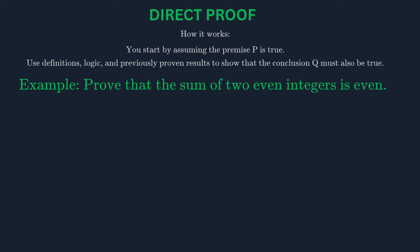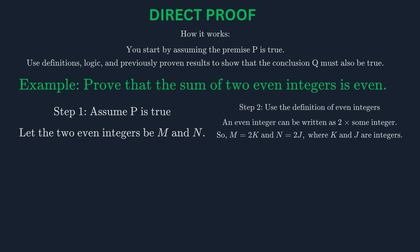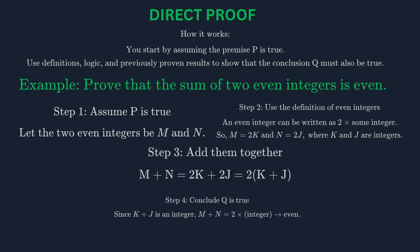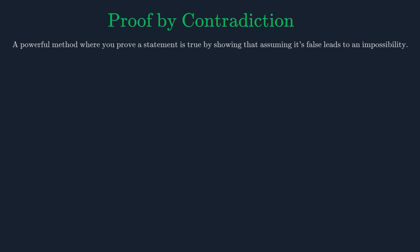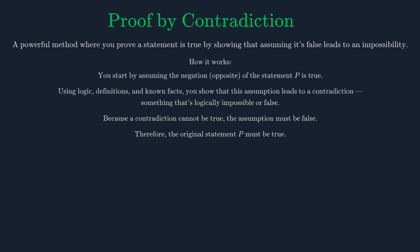We start by assuming P is true: we have two even integers, let's call them M and N. By definition, an even integer can be written as 2 times some other integer. So M = 2K and N = 2J. Their sum is M + N, which is 2K + 2J. We can factor out a 2, giving us 2(K + J). Since K + J is also an integer, the sum is 2 times an integer, which is the definition of an even integer. We have successfully shown that Q is true.